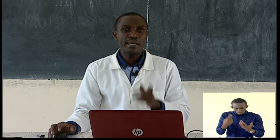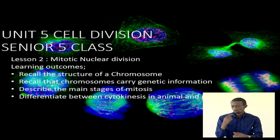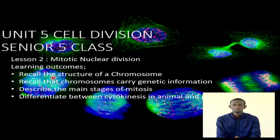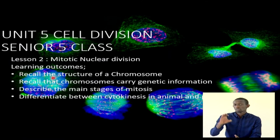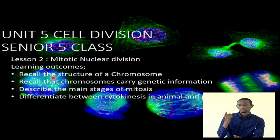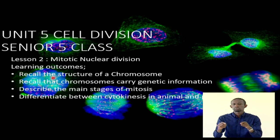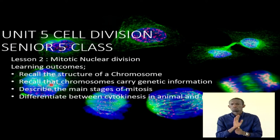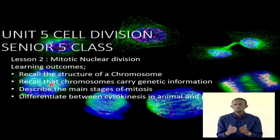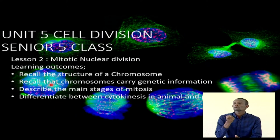A few things we are looking at today. First, we need to remember that cells contain chromosomes — we looked at this previously: the structure of the chromosome, the components, the design, what it carries and to where. Objective number two: this genetic information has to be handed over. We will be describing the main stages of mitosis.